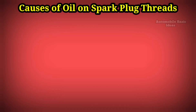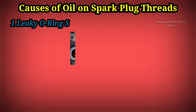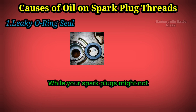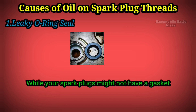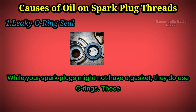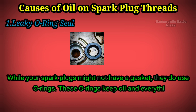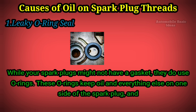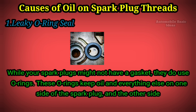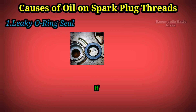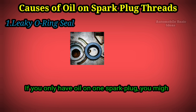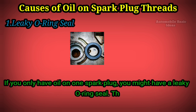Causes of oil on spark plug threads. One: leaky O-ring seal. While your spark plugs might not have a gasket, they do use O-rings. These O-rings keep oil and everything else on one side of the spark plug, and the other side remains dry. If you only have oil on one spark plug, you might have a leaky O-ring seal.